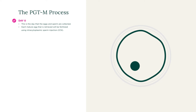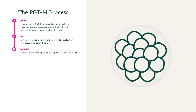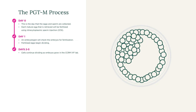On day one, the embryologist will come into the lab and check the embryos for normal fertilisation. Over the next several days, the fertilised eggs will begin to grow and divide. Around day five through day seven, the embryos are made up of approximately 80 to 100 cells, which is known as the blastocyst stage of development. It's important to understand that not all of your embryos may grow or reach the blastocyst stage.